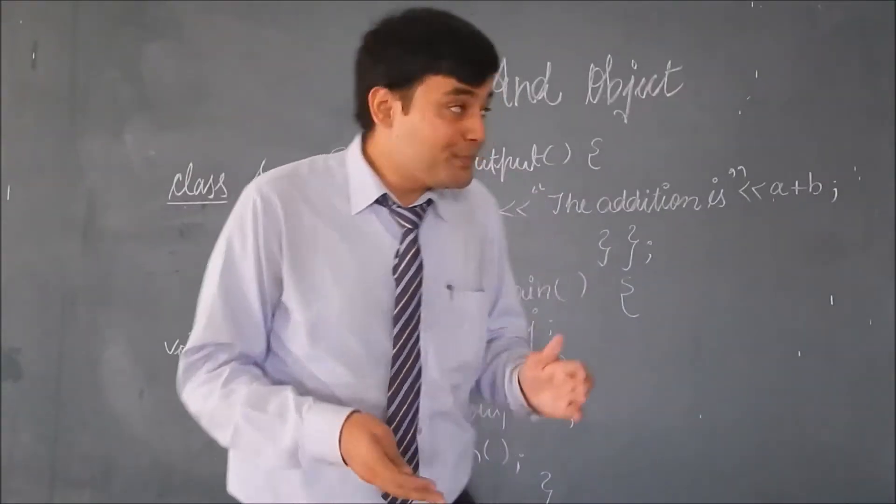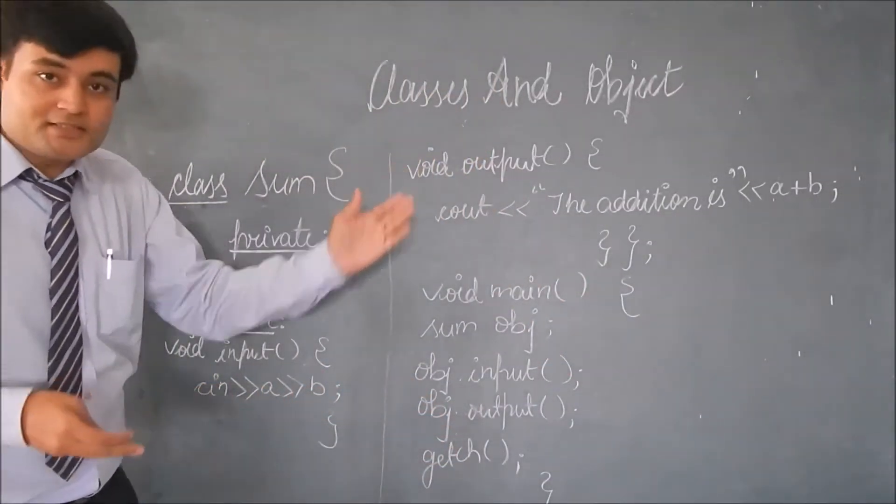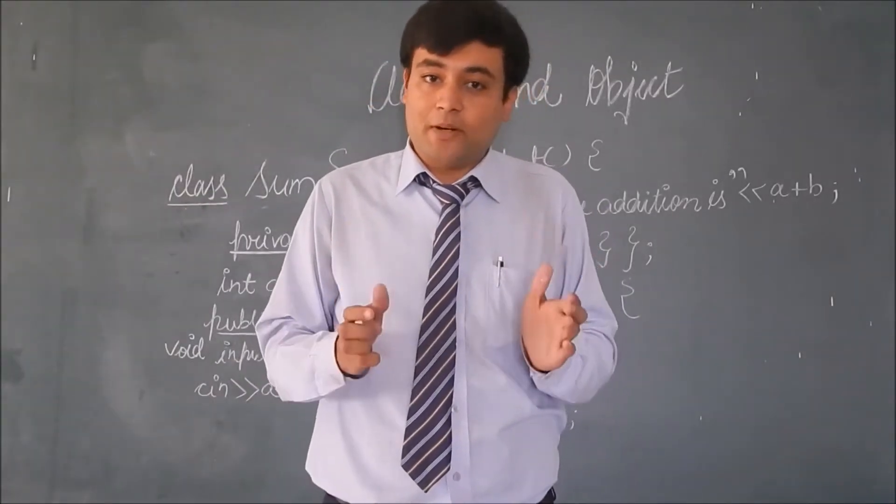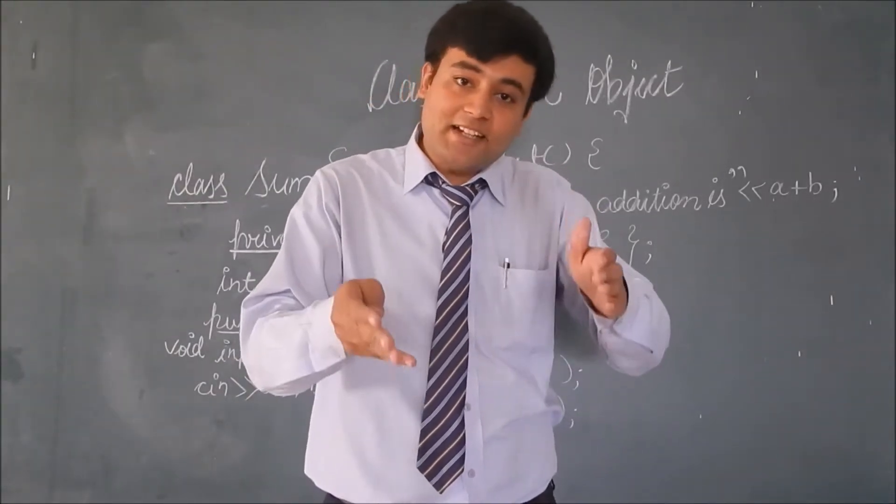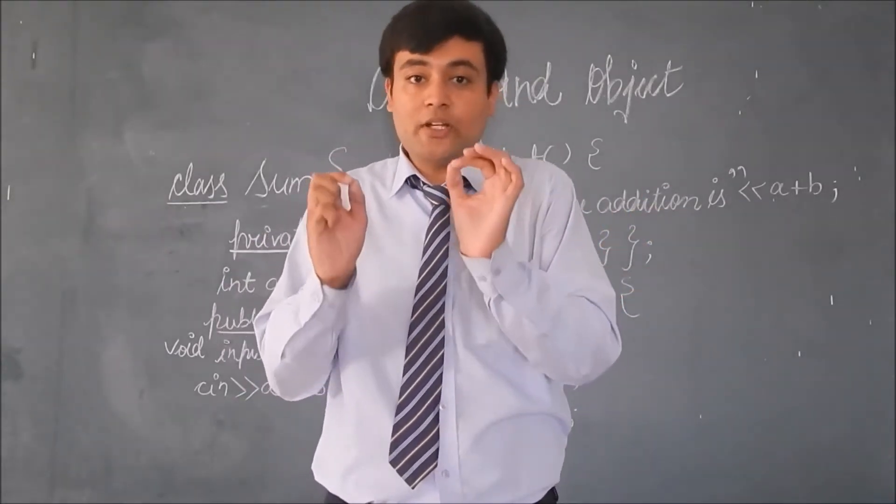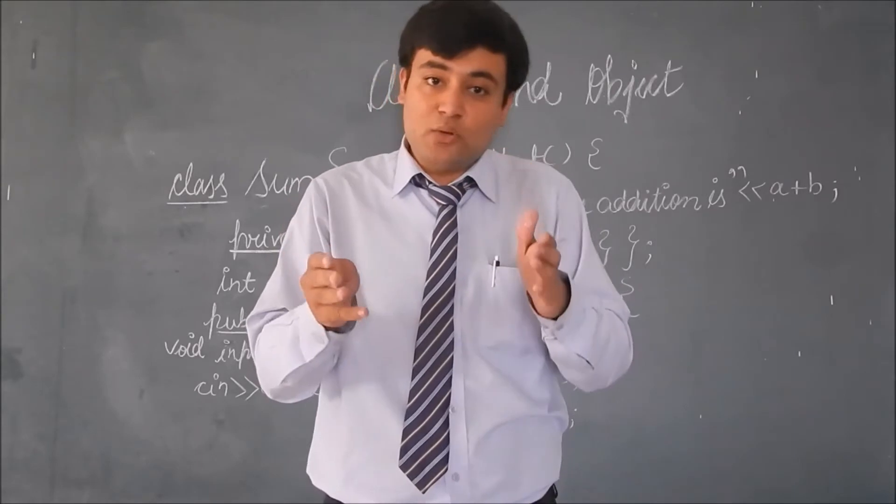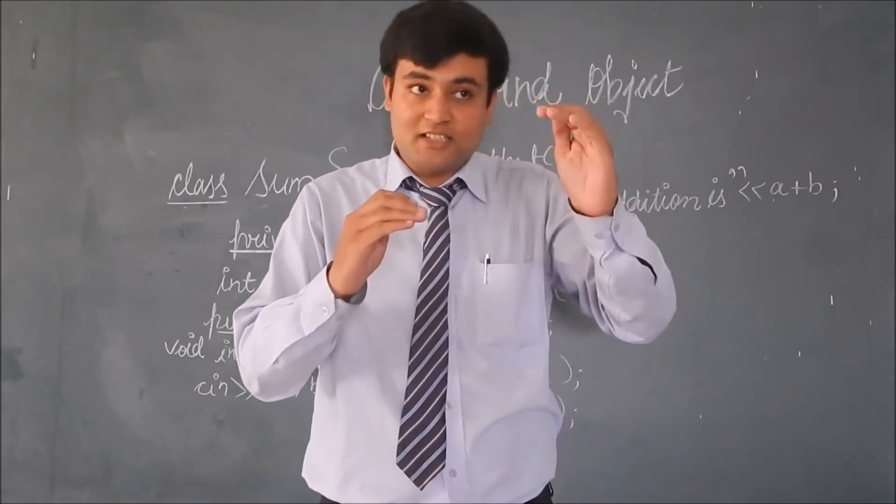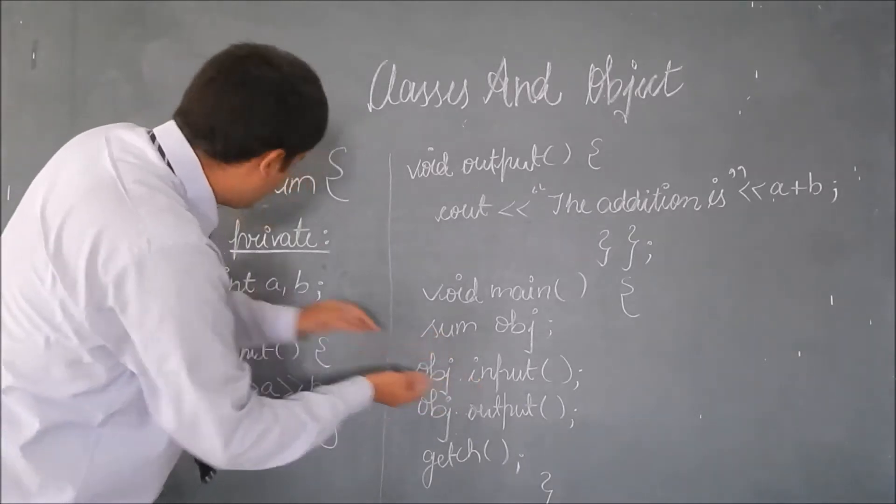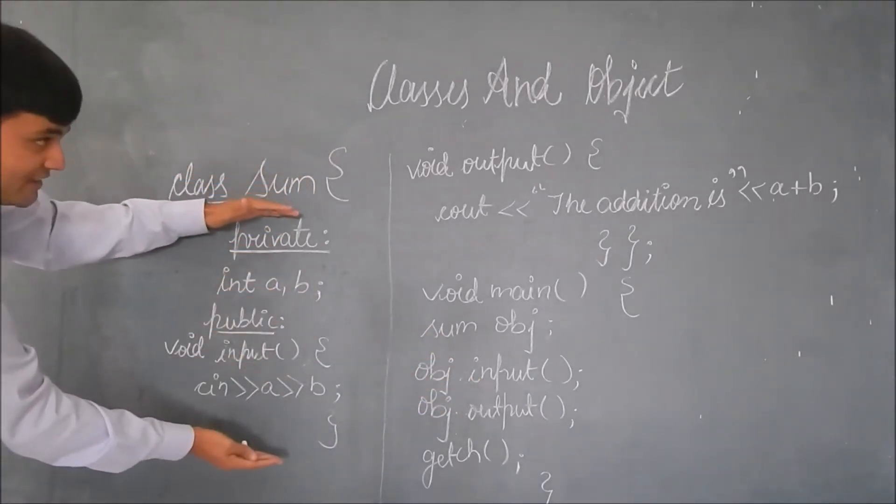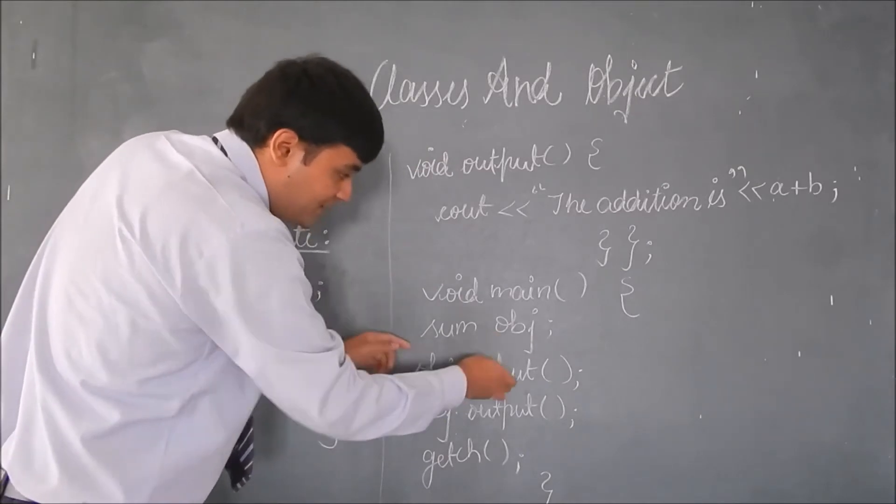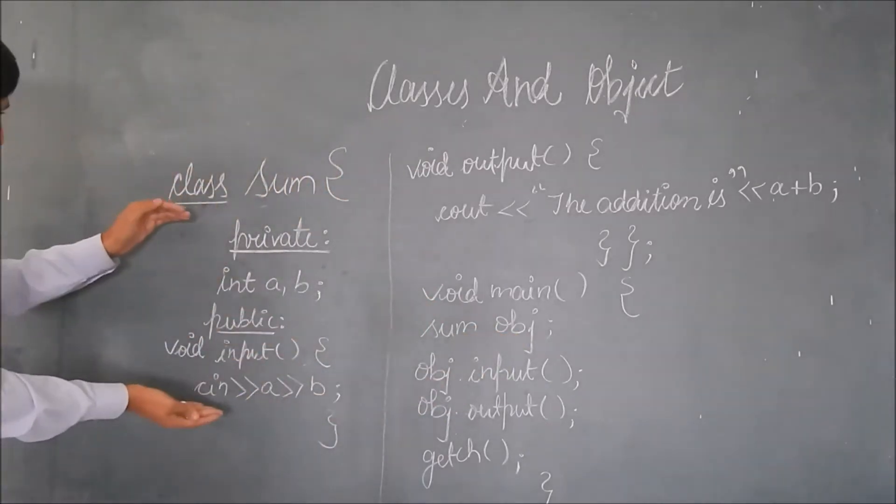Now let's move on to the concept of Classes and Objects. Classes are the collection of data members and member functions. And for the skeletal structure that a class has provided, objects are the memory allocators. They allocate the memory for the skeletal structure which is provided by the class. Here it's an object, here it's a class, this is a skeletal structure. This object is allocating memory for these things.